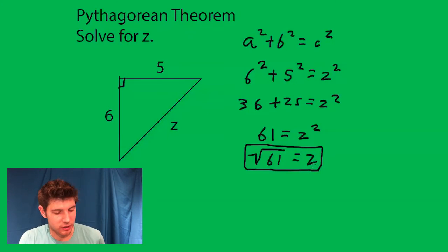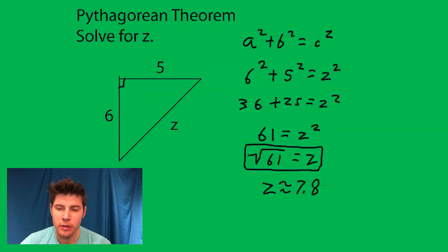Or you can plug into your calculator square root of 61 and find out that it's about 7.8. So this is the actual answer, and this is a close approximation. That's it. Talk to you later. Bye.